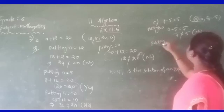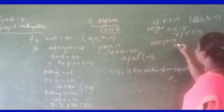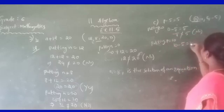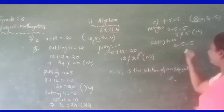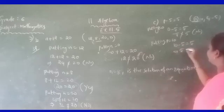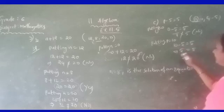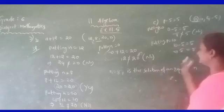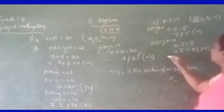Put P equal to 10: 10 minus 5 is 5. Is 5 equal to 5? Yes, both sides are balanced. You can say that this is the solution of the equation.